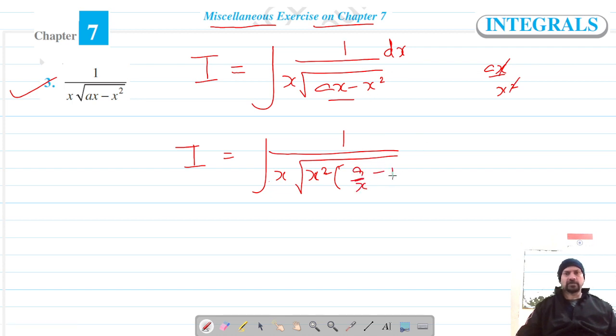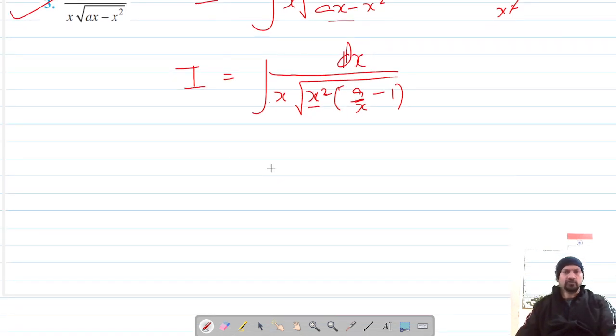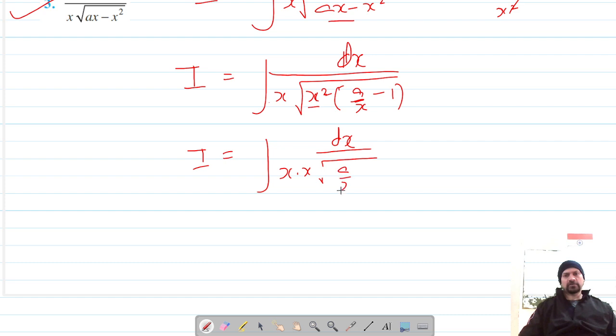So the first term is a over x, the second is 1, and root of x squared is x. So finally it's dx over x times x, and under the root is a over x minus 1. I can write it as 1 over x squared with under root a over x minus 1 with dx.